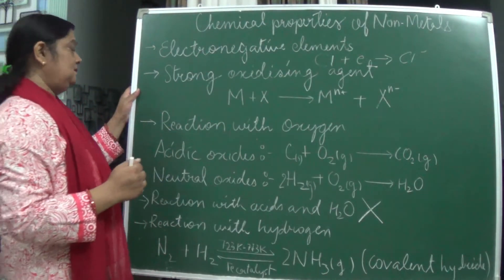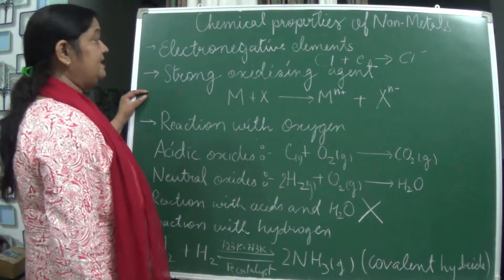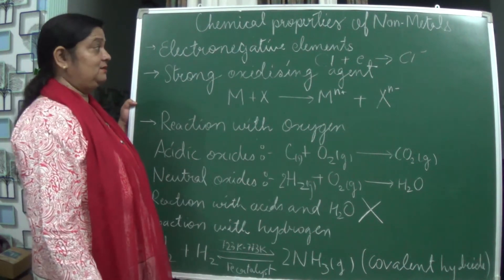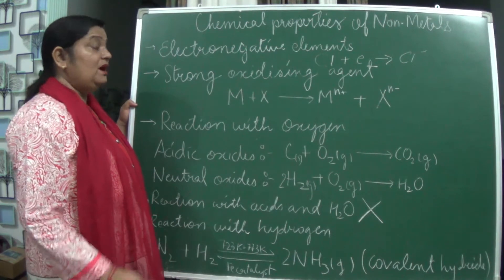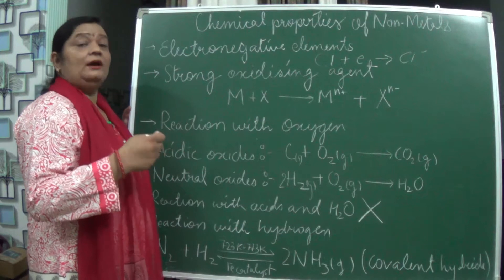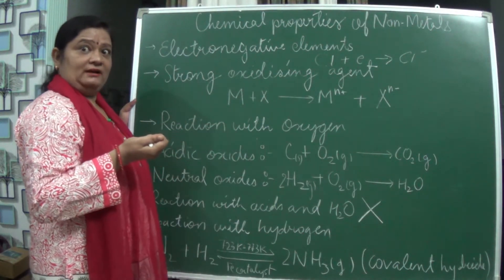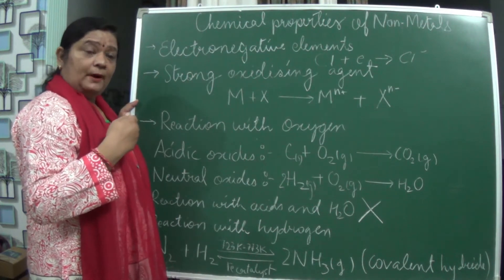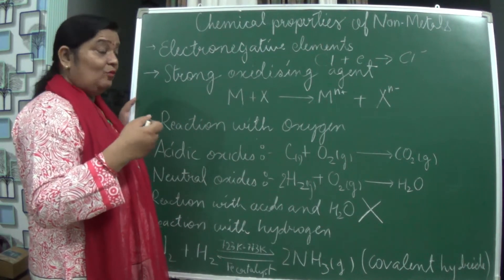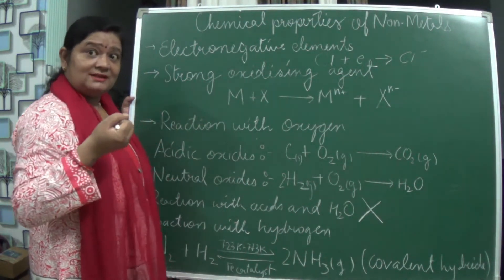Chlorine is a non-metal. Now, non-metals have strong oxidizing power. It means they have the tendency to take the electrons from whatever they react with. Suppose if we are talking about sodium chloride salt, chlorine is a non-metal in that. It takes the electrons from the sodium, so they have got the oxidizing power.